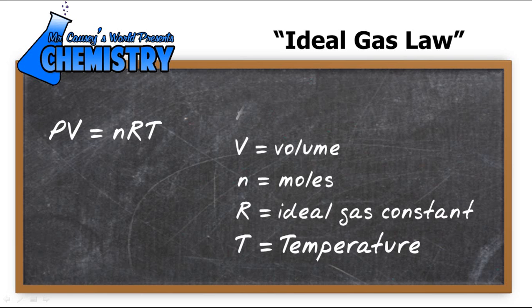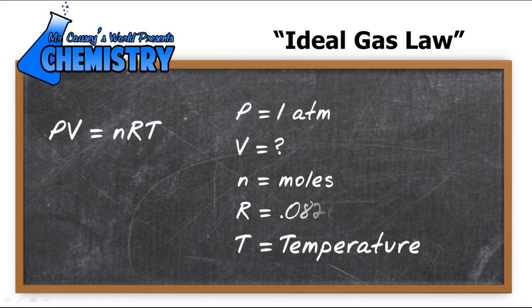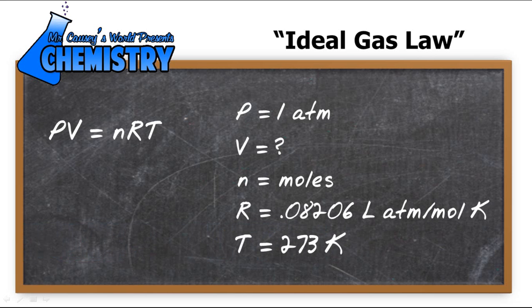So we have one atmosphere. That is the standard pressure, one atmosphere. And we're looking for the volume. We know that R is 0.08206 liter atmospheres per mole kelvin. And then our temperature, of course, is going to be 273 kelvin, which is the temperature for standard temperature and pressure. And the thing we're missing here is moles.